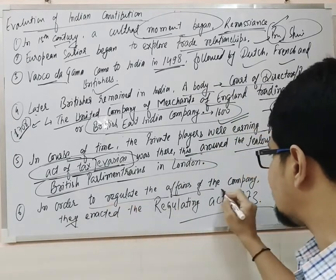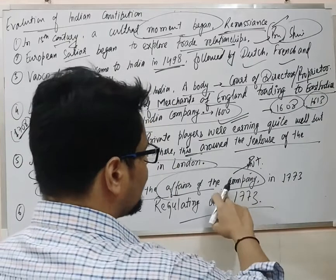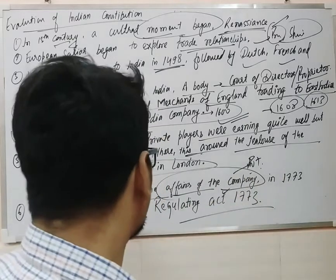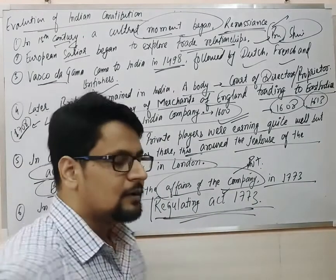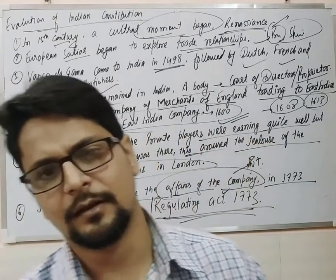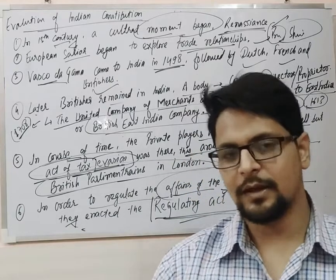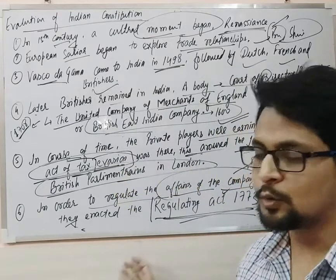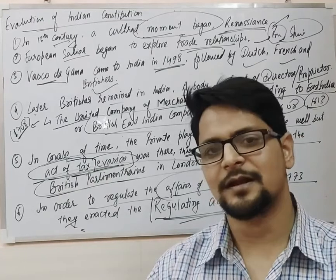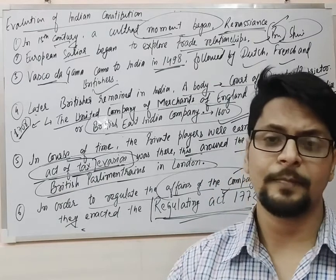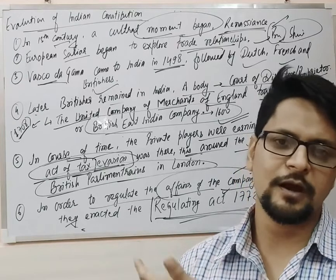In order to regulate the affairs of the company — which was a private company operating under the banner of the East India Company — in 1773, for the first time they enacted the Regulating Act 1773. Whenever someone asks what the Regulating Act means, the word regulation means to put an imposition, to limit something, to ban something, or to make a rule on something. So they created these rules for the private players of England who were there in India, not for the Indians. It was meant for the Britishers trading in India under the British Crown. This regulation rule was created for them in 1773.